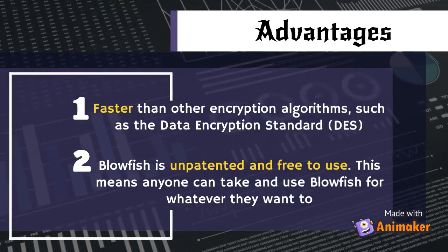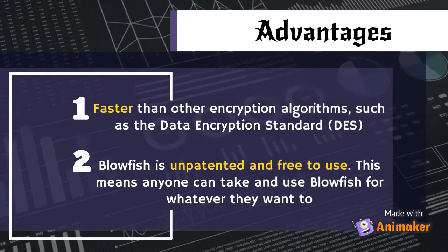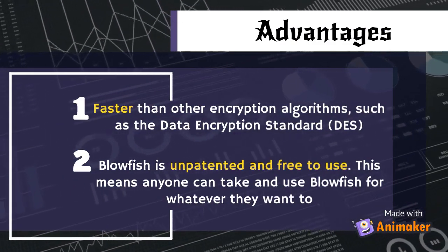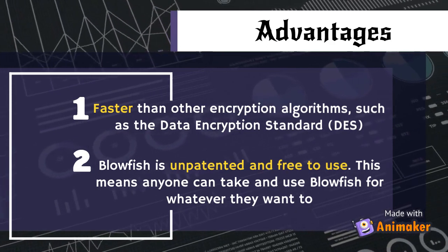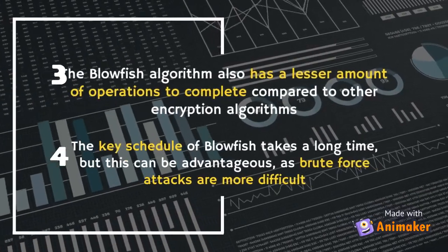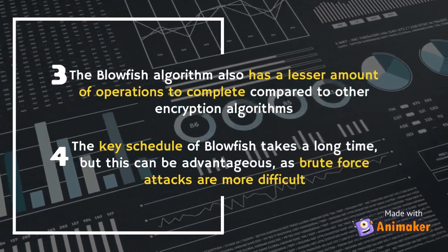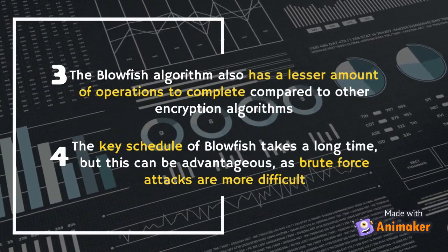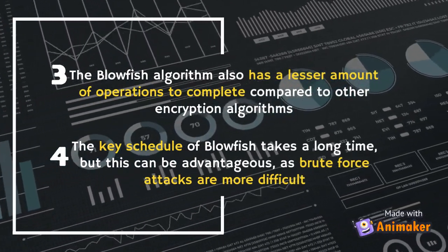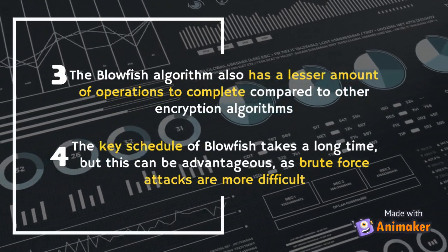Advantages: First, Blowfish is faster than other encryption algorithms such as the Data Encryption Standard, DES. Blowfish is unpatented and free to use, meaning anyone can use it for whatever they want. The Blowfish algorithm also has a lesser number of operations to complete compared to other encryption algorithms. The key schedule of Blowfish takes a long time, but this can be advantageous as brute force attacks become more difficult.